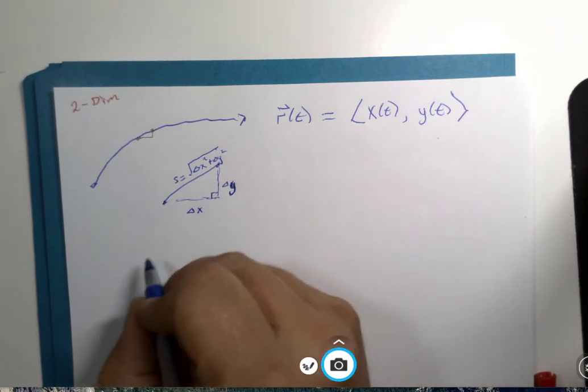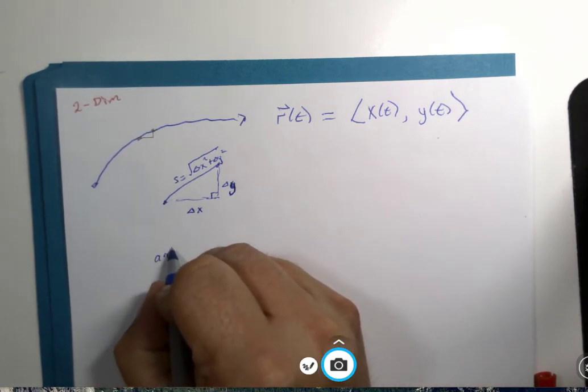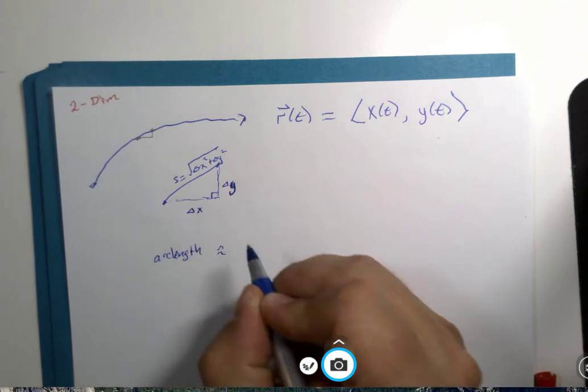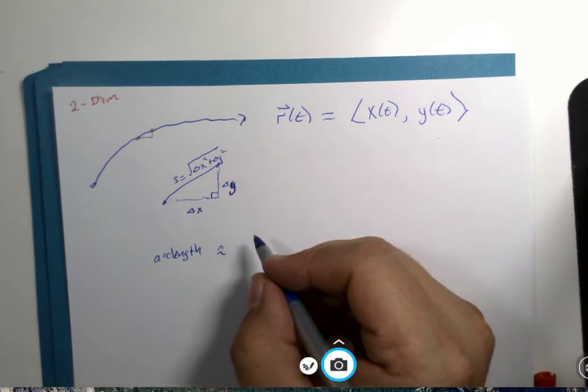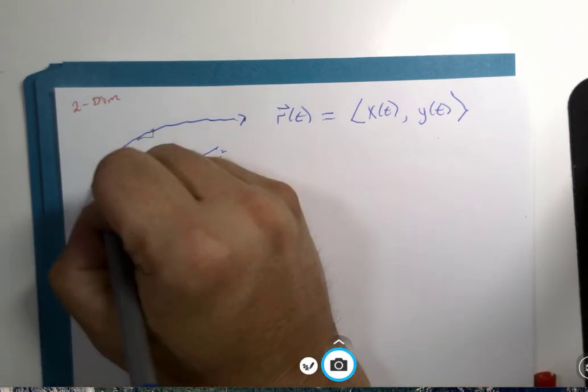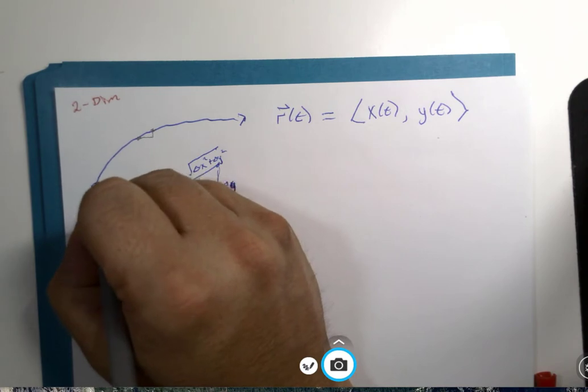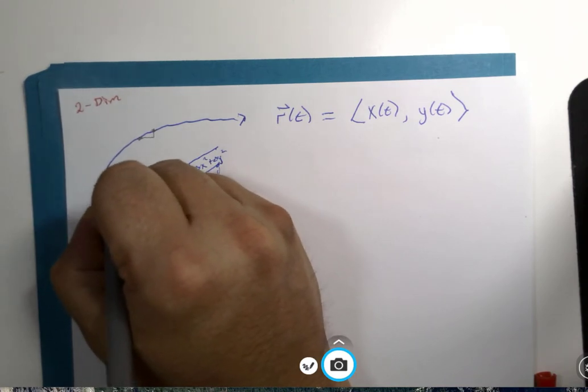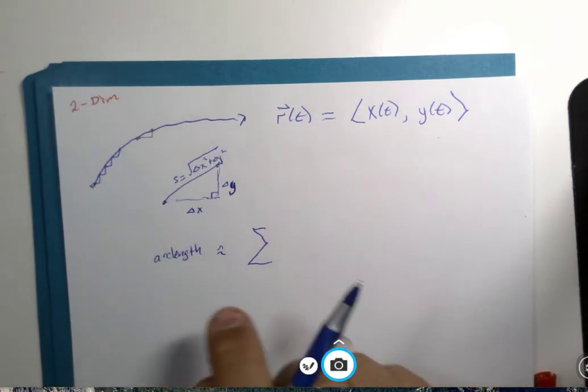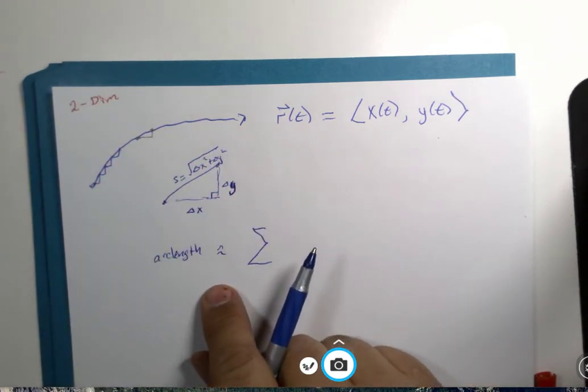And the arc length is approximately equal to the sum of a whole bunch of these. And we'll just break it up into lots of little pieces, and if you make the pieces small enough, we will get a good approximation.